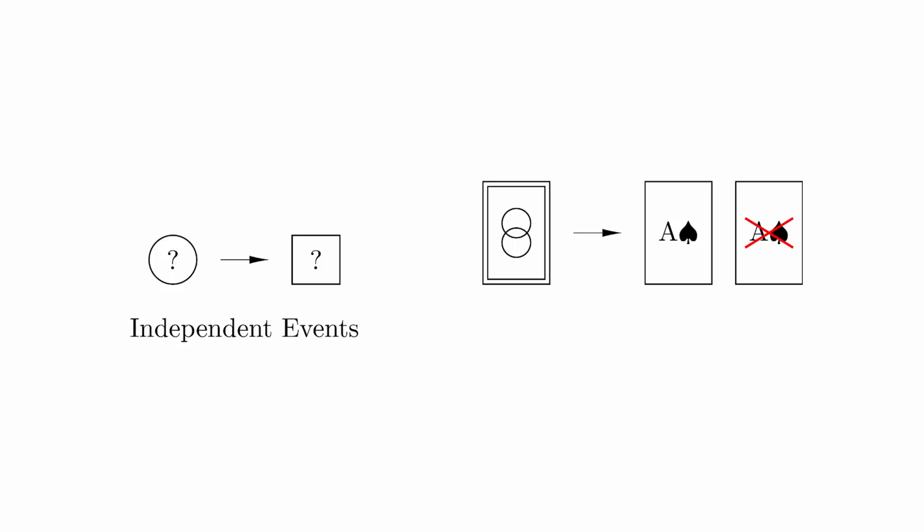We would call this dealing without replacement, and this is an example of dependent events. If we were to shuffle the ace back into the deck before dealing the second card, then the two events are now independent and we call this dealing with replacement.